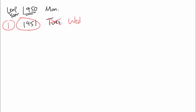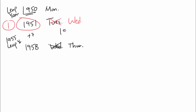Adding 7 years, you'd expect 1958 to be Wednesday. But 1955 is a leap year, and since it falls between 1951 and 1958, instead of Wednesday, 1958 is actually Thursday. That tells us 1957 was Wednesday. So we have two so far: 1951 and 1957.